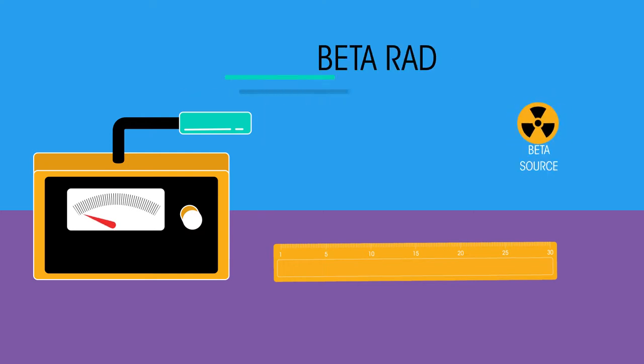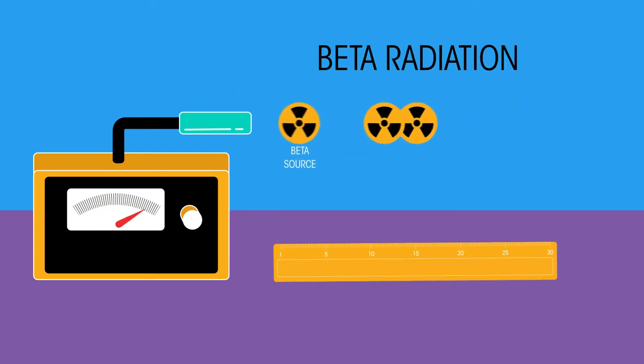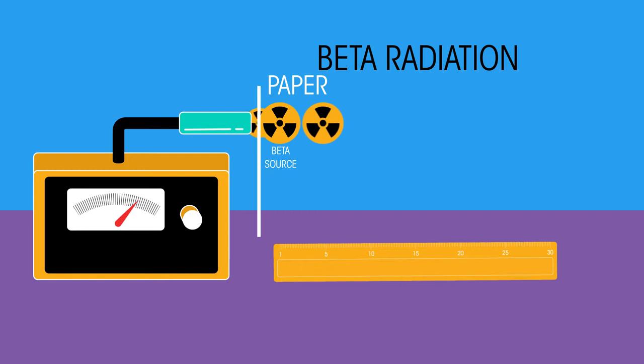Now for beta radiation. The addition of paper stops some of the beta particles being detected. And the addition of the 1mm aluminium sheet stops all of the beta particles. We can see that beta particles have a good penetration in air and thin paper but can be stopped by thin metal.